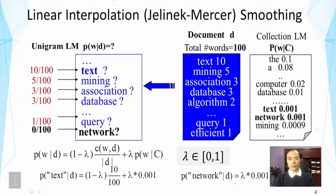Now if you think about this, you can easily see the alpha sub d in this smoothing method is basically lambda, because that's the coefficient in front of the probability of the word given by the collection language model here. So this is the first smoothing method.